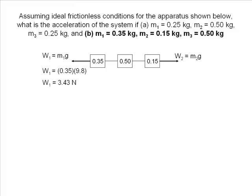W1 is equal to 3.43 newtons and is pulling the system in the negative direction. W2 is 1.47 newtons and is pulling the system in the positive direction. We can see that the negative force is larger than the positive force, so we can assume that the acceleration will be negative.